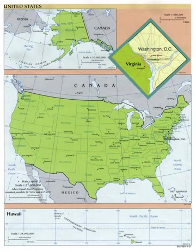The various states are then typically subdivided into counties. Louisiana uses the term parish and Alaska uses the term borough for what the census terms county equivalents in those states. Counties and county equivalents may be further subdivided into townships. Towns in New York, Wisconsin and New England are treated as equivalents to townships by the United States Census Bureau.